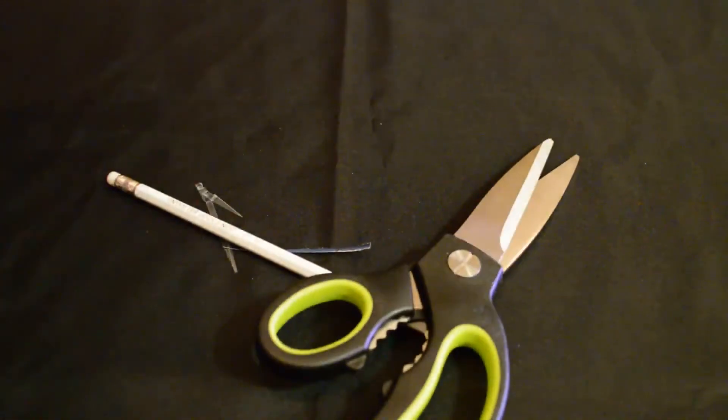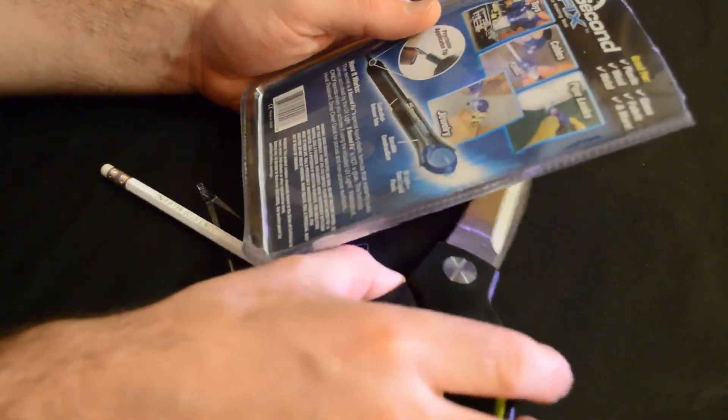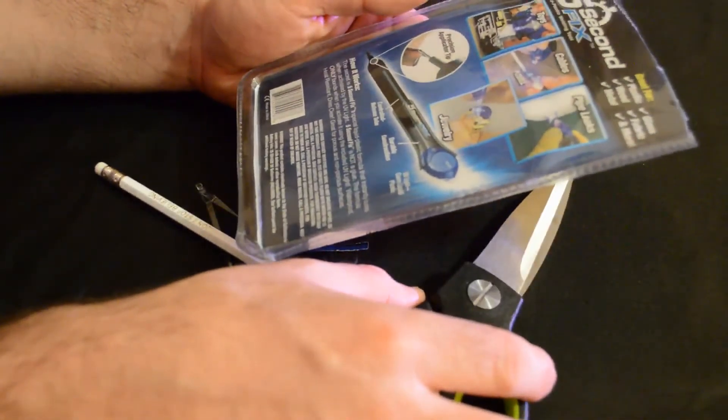See if this thing actually works. Once again, this is the As Seen on TV Five Second Fix. All right, so I'm opening it up. On the back it says toys, cables, pipe leaks, jewelry, controlled release tube, durable construction, UV light.